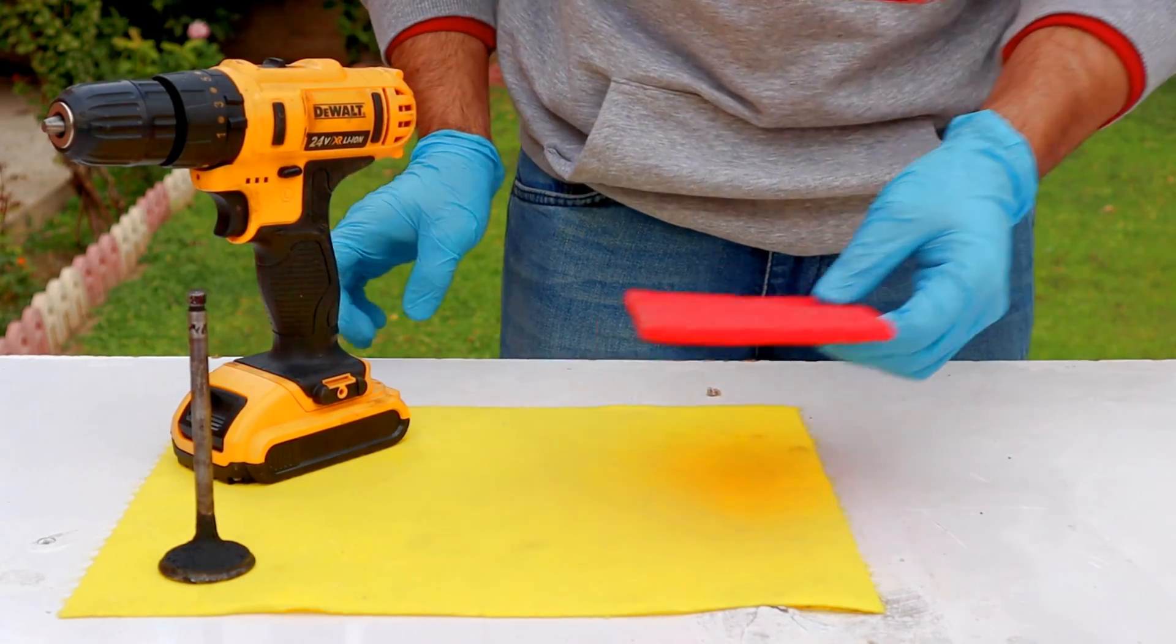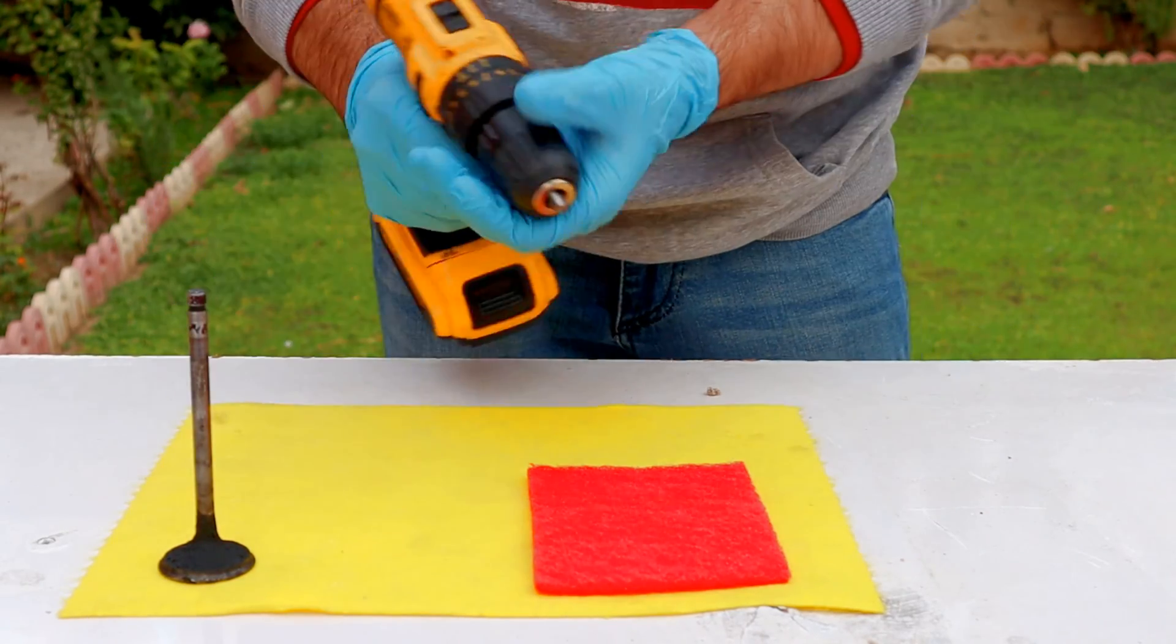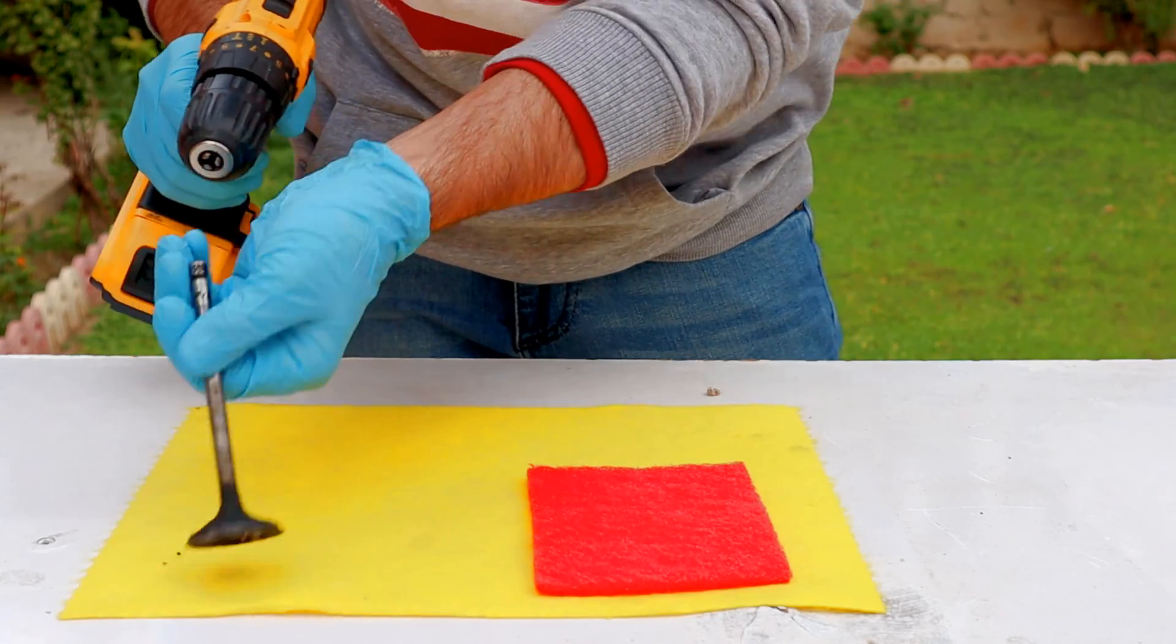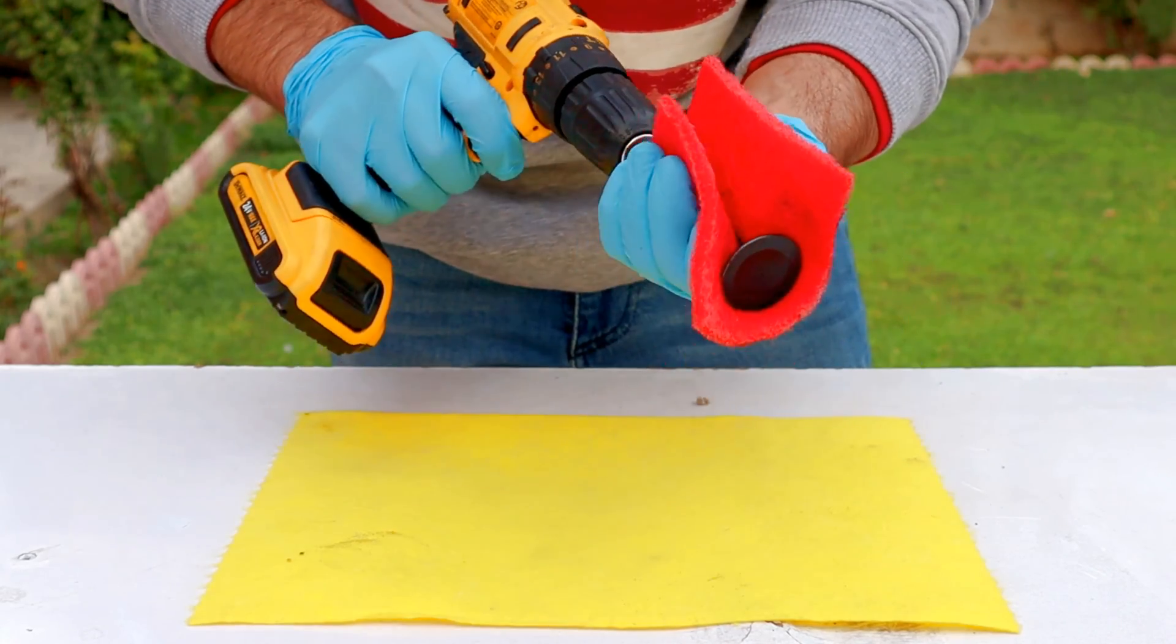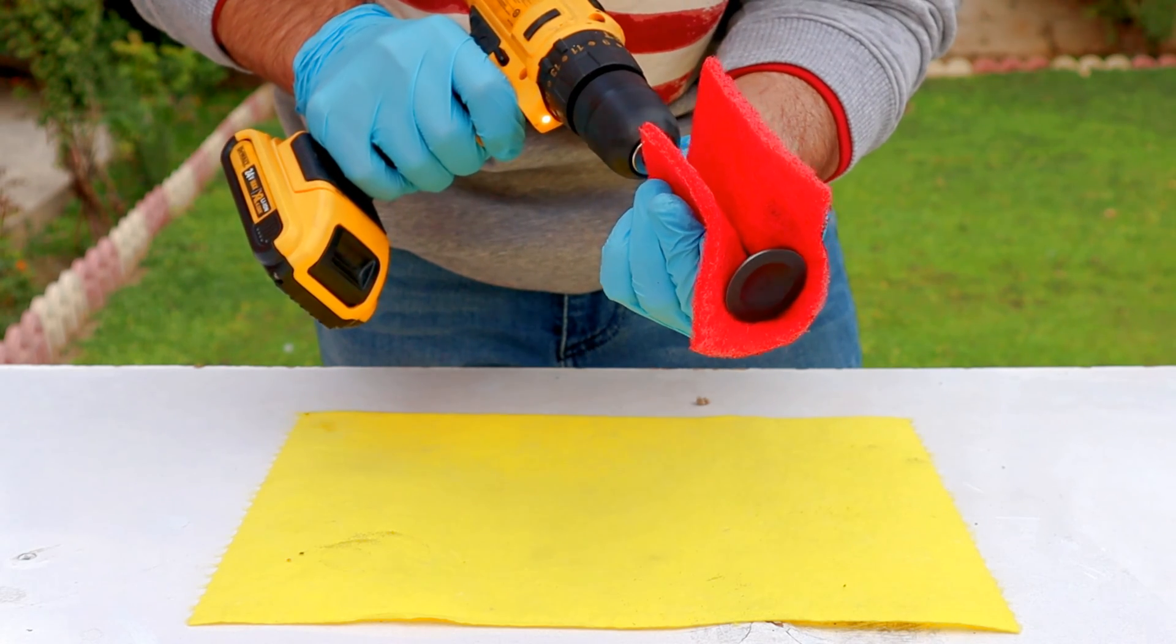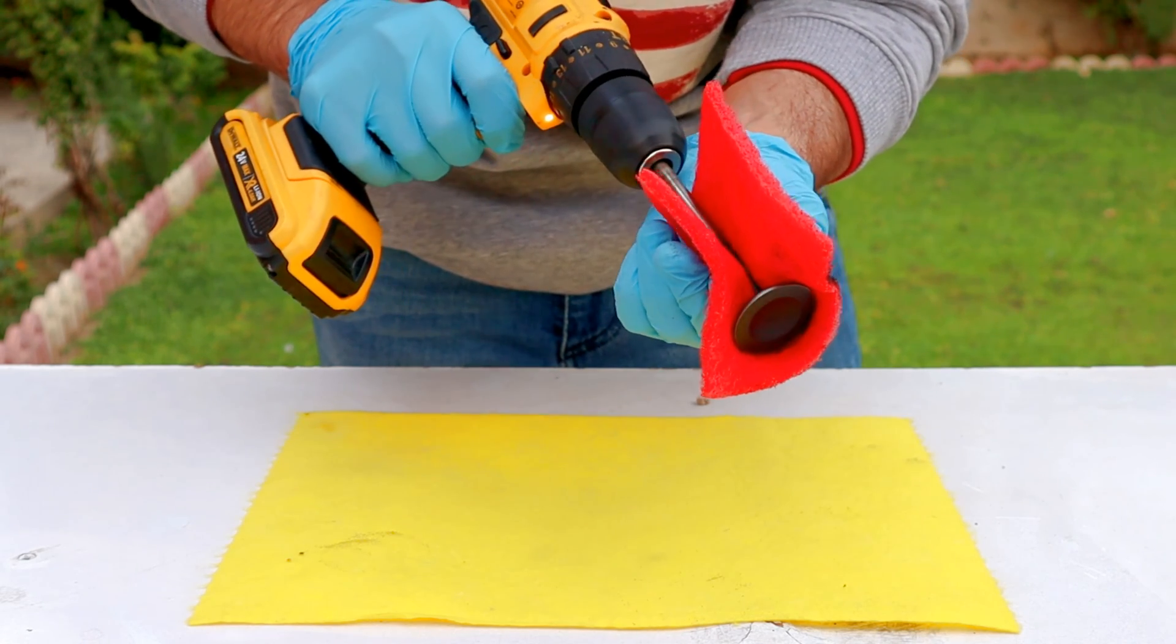The first way if it's out of the engine and disassembled: attach it on a drill and use medium scotch brite. You can do this only when you're rebuilding the engine. This may not be useful for most of you. I will show you the easy ways in a minute.